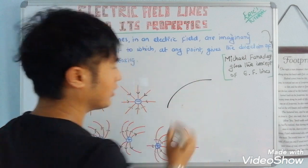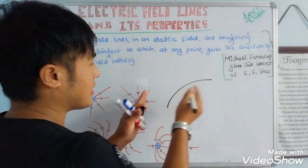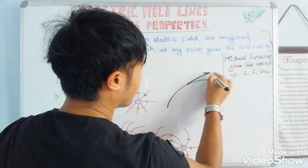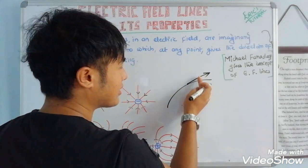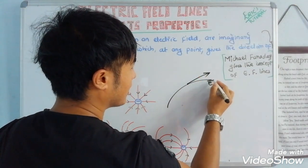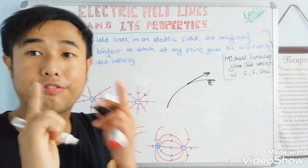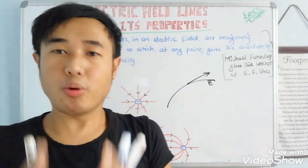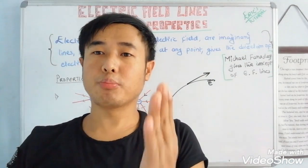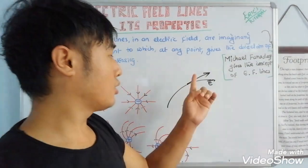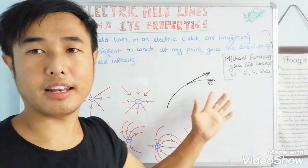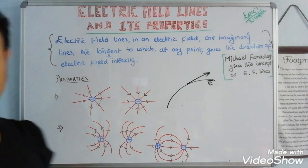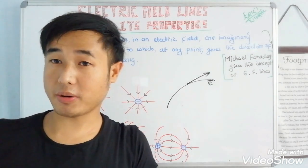Electric field lines — at any random point you consider, the tangent drawn at that point will give the direction of the electric field. The main importance of electric field lines is to give the direction of the electric field.